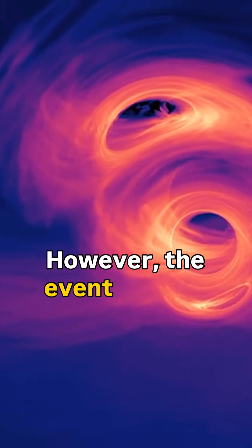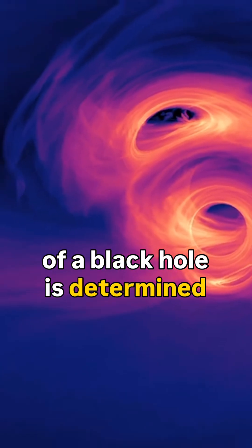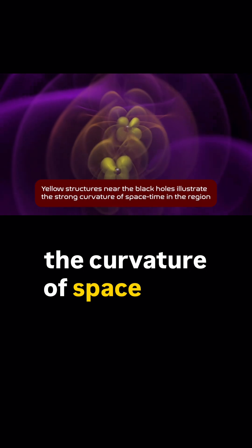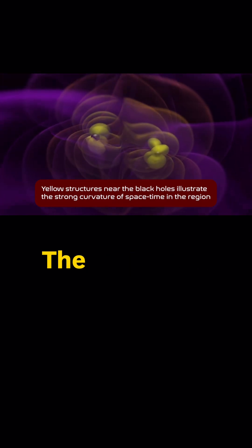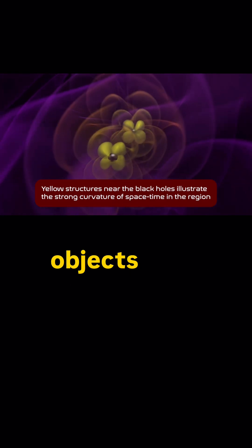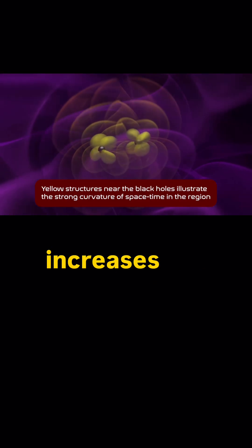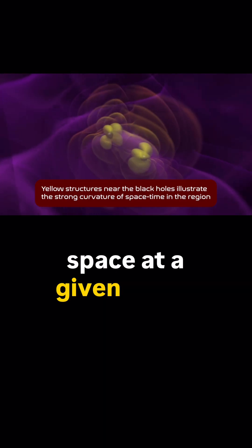However, the event horizon of a black hole is determined not by gravitational force, but by the curvature of spacetime, and that is not a vector quantity. The curvature from two objects does not compensate for one another, but on the contrary, increases the curvature of space at a given point.